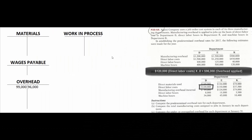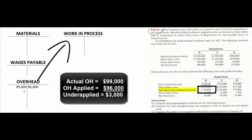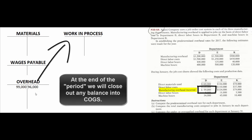The actual overhead incurred during the month is $99,000, but we only applied $96,000, so we're $3,000 under-applied. Hopefully next month we'll be $3,000 over-applied and it will even out. If it doesn't, at the end of the period we'll close a small amount into cost of goods sold, or if it's a large number, we'll sprinkle some into cost of goods sold, some into finished goods, and some into work in process.